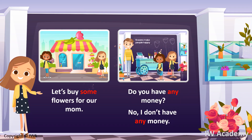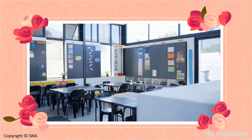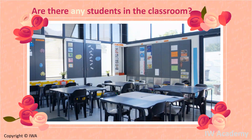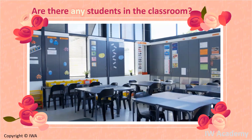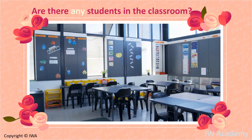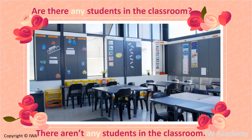What about this picture? Let's read the sentences again. Do you have any money? No, I don't have any money. The question and the answer have the word 'any'. Now we will go through some examples to learn why we use it. Are there any students in the classroom? In this question, we used 'any' to ask about the students. The answer is no: There aren't any students in the classroom. It's negative because it has the word 'aren't'. So we can use 'any' with questions and negative sentences.